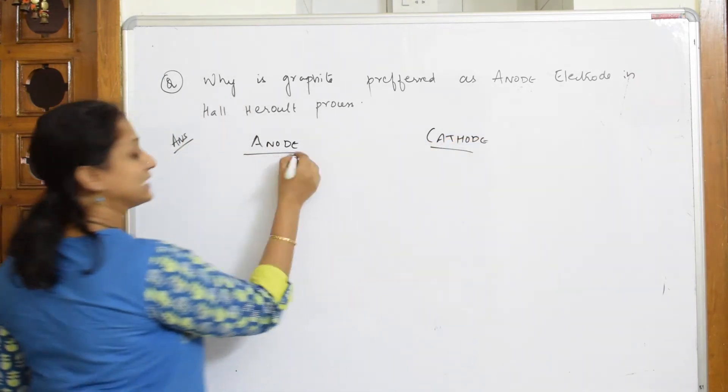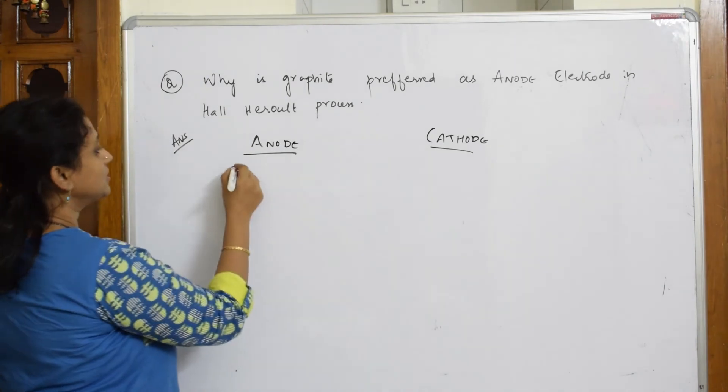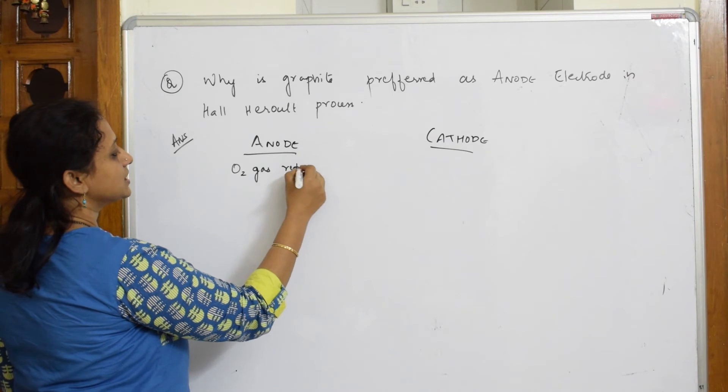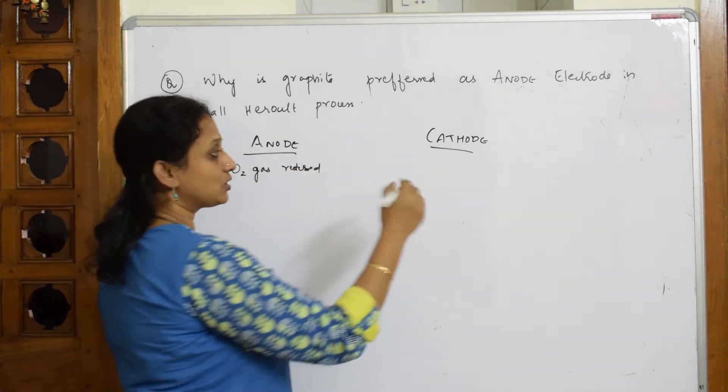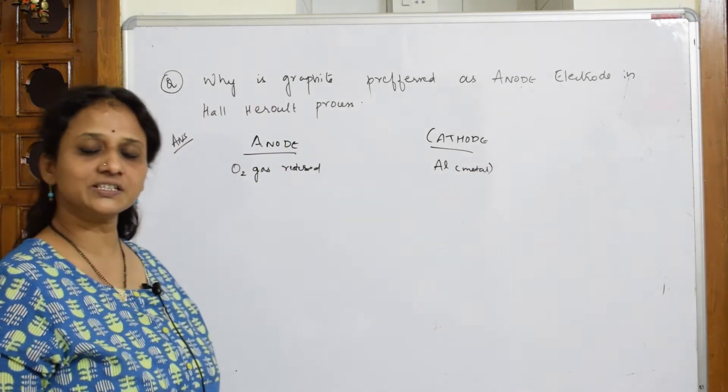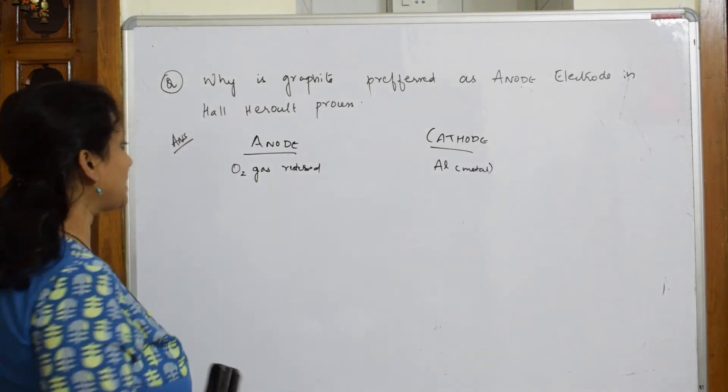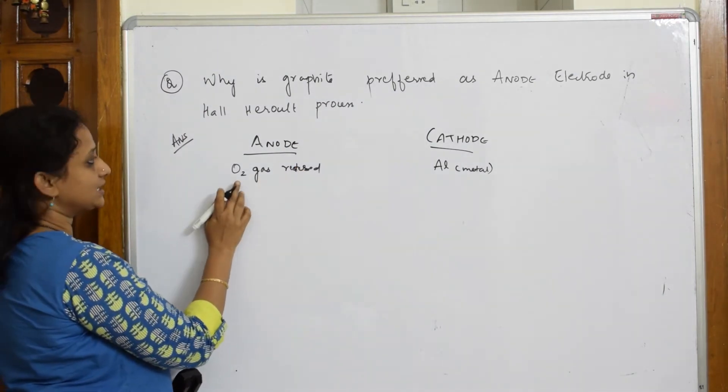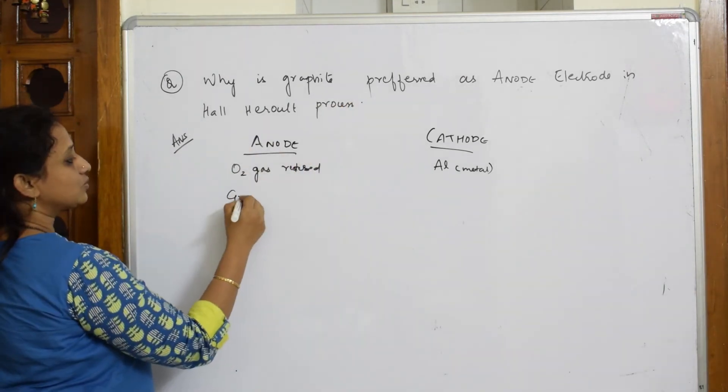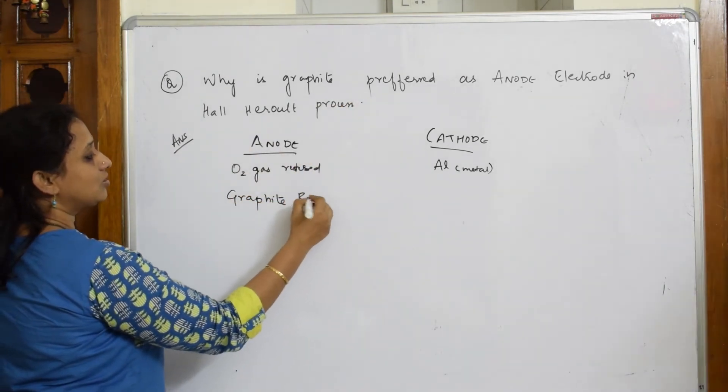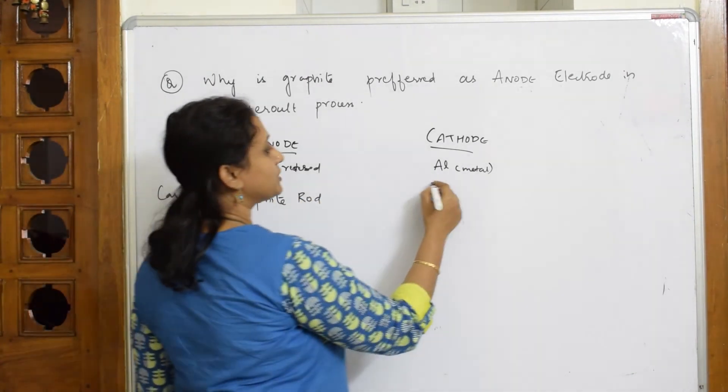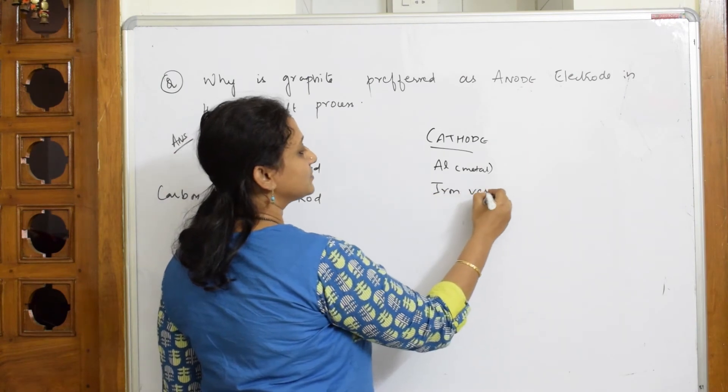Basically in Hall-Heroult process, we have two electrodes. One is your anode electrode and the other is your cathode electrode. At anode what was released? Oxygen gas was released. And cathode what was released? Aluminium metal was released. We have seen the reaction cell reactions in Hall-Heroult process. Now, what happens? Your oxygen gas, whatever is there. What is an electrode made up of? Anode is made up of graphite rod or carbon rods. What is your cathode made up of? Cathode is made up of an iron vessel.